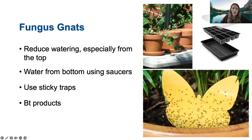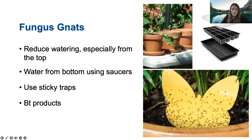Pesticides are not very effective for fungus gnat control because the timing of application really needs to coincide with when the larvae are actually in the soil feeding, which often means very frequent applications. Most products available to control fungus gnats are a BT — Bacillus thuringiensis — product. Make sure the product is specifically meant for fungus gnats. There are other BT products meant for caterpillars, and they won't work on each other. The Israelensis strain is the one that works on the larval stage of fungus gnats and mosquitoes. If you choose to use pesticides, read the label, make sure you can use it inside, and if not, take the plant outside to treat it.